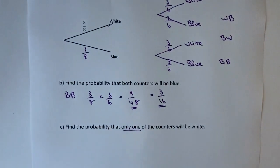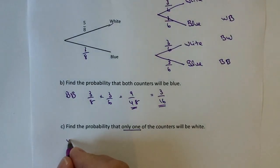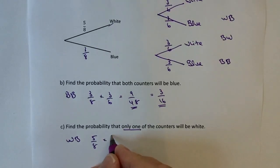Let's have a look at working out firstly white blue. The probability of white on bag A is five eighths, on bag B is three sixths. Multiply that together we're going to get fifteen out of forty-eight.